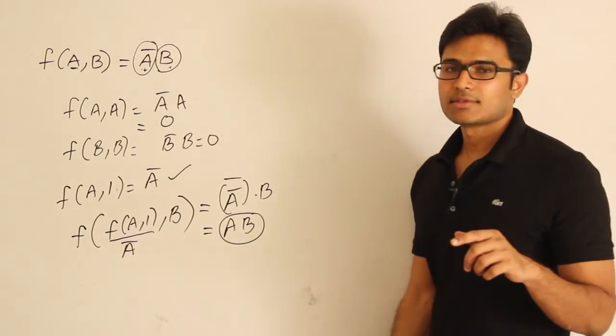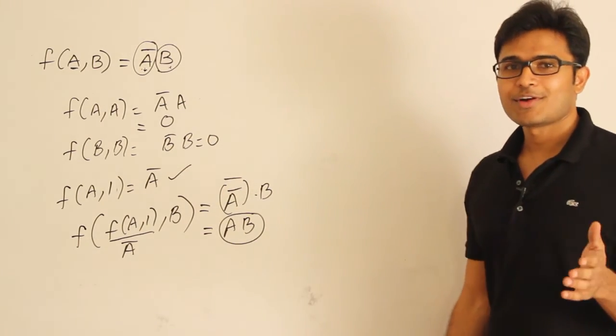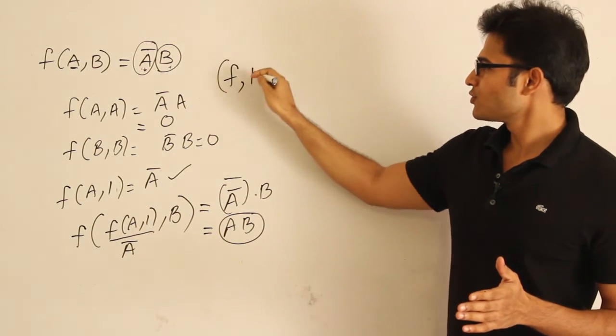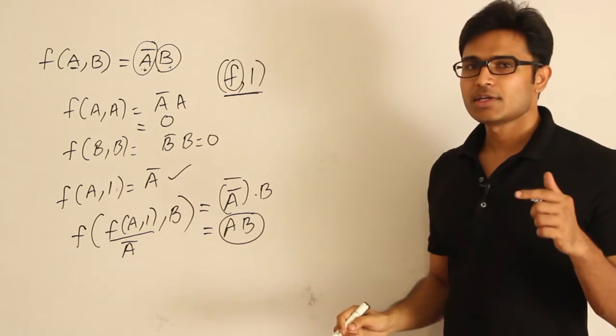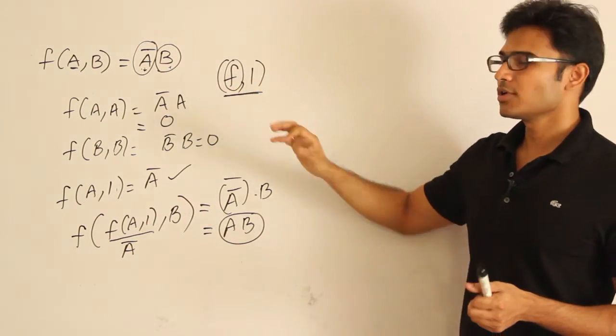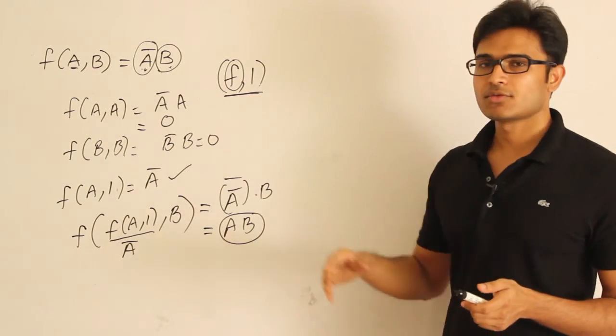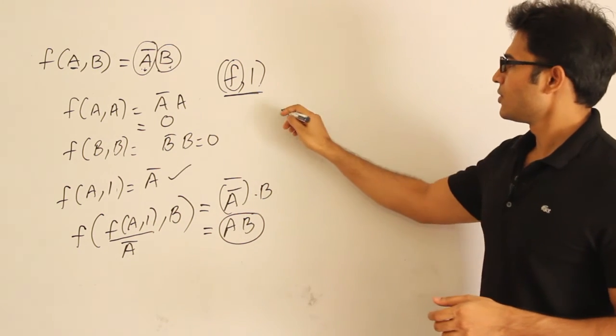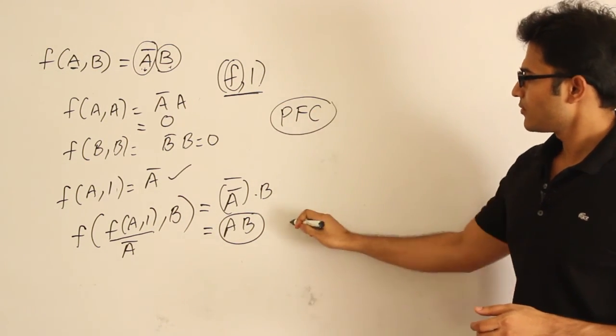So what can you say? This particular expression is functionally complete. But then it is not actually functionally complete. The reason is we are taking support from 1. So f comma 1 is functionally complete. Therefore f is partially functionally complete, which means if you add 1 to f you are able to make everything. But without 1 it is not complete. Therefore it is partially functionally complete. Got it? Fine.